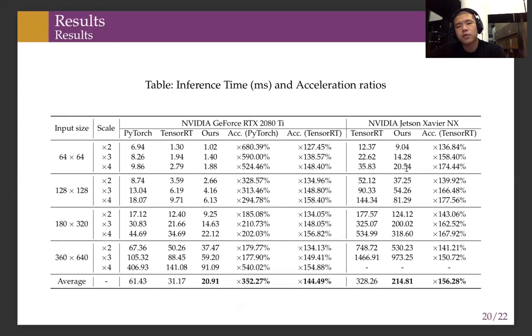This figure is one of the most important—we beat not only PyTorch but also TensorRT on normal GPU with 40% average acceleration. On embedded devices, we achieve 56% acceleration, which is really significant.